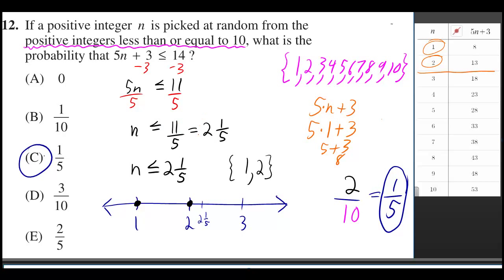As a mixed number, that's 2 and 1/5. So n has to be less than or equal to 2 and 1/5. But remember, it's got to be a positive integer.